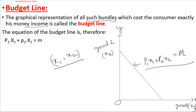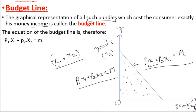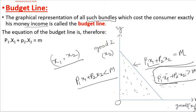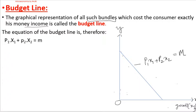The budget line's equation is p1x1 + p2x2 = m. Points under the budget line have p1x1 + p2x2 < m; points above have p1x1 + p2x2 > m. This is the complete picture of the budget line. Read the relevant section in your book and replay the video if needed.